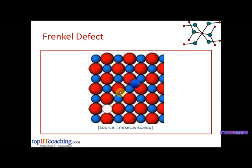As we can see in this figure, if red balls indicate the anions and blue balls represent the cations, a cation — the blue ball — leaves its normal site in the crystal lattice and occupies an interstitial space instead. This kind of defect is called a Frenkel defect.